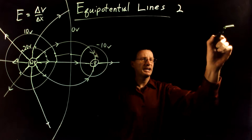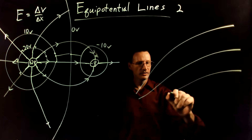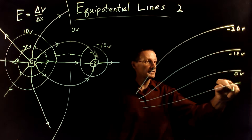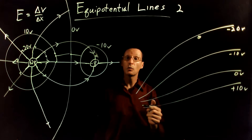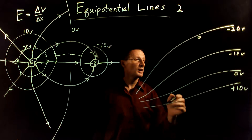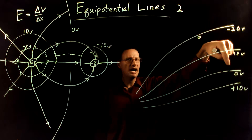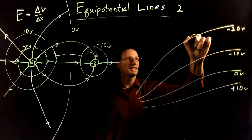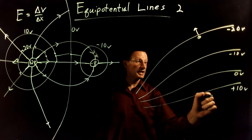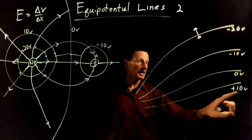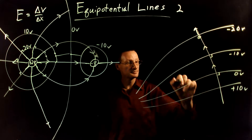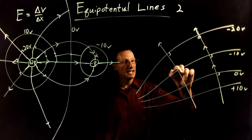Let's do one more example. Imagine I have some parallel equipotential lines: the negative 20 volt line, the negative 10 volt line, the zero volt line, and the positive 10 volt line. If I put a positive charge here, which way is it going to move? Positive charges move from high potential to low potential. Moving toward the positive 10 side would be low to high — that's the wrong way. It's going to move toward the negative side. So the force on this positive charge is that way. The electric field lines must be perpendicular to all of these lines and point from high potential to low potential — so my electric field lines point like this.